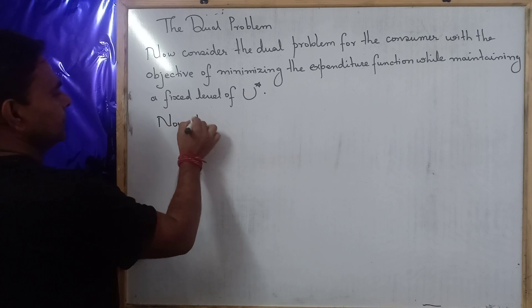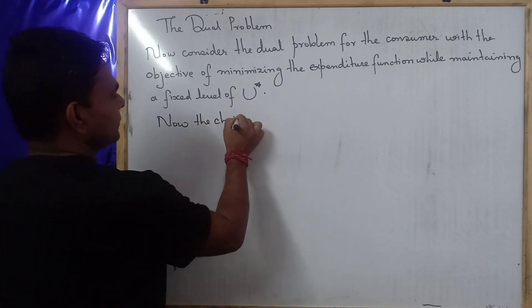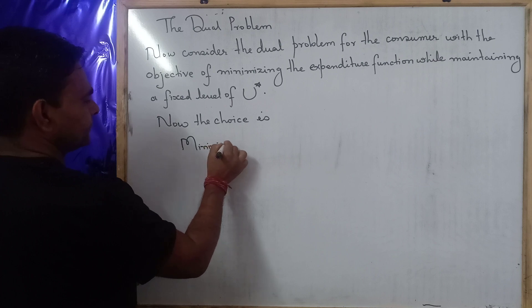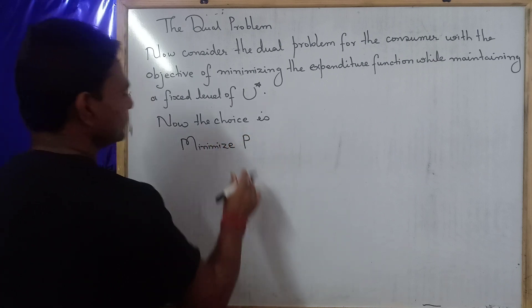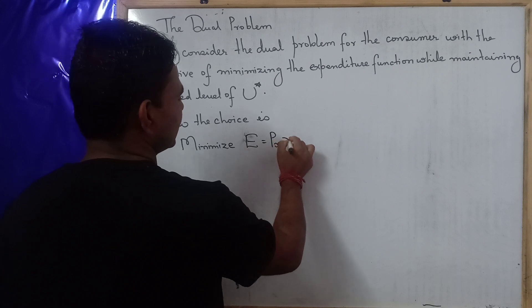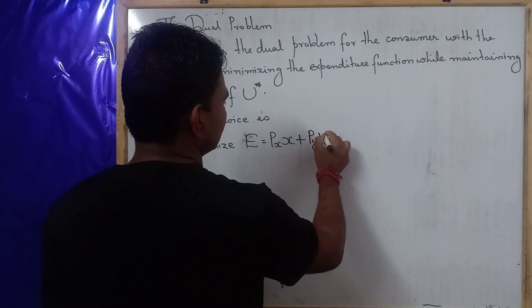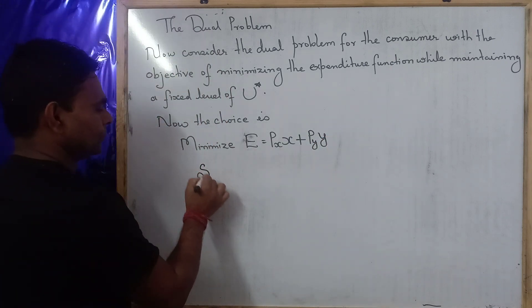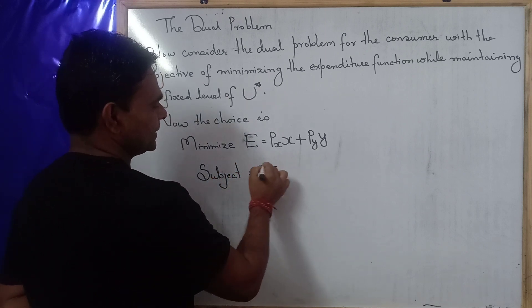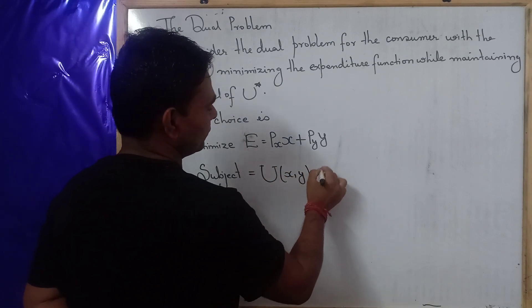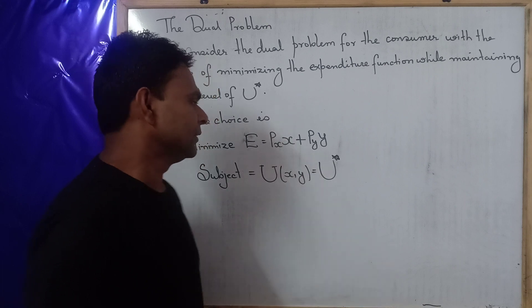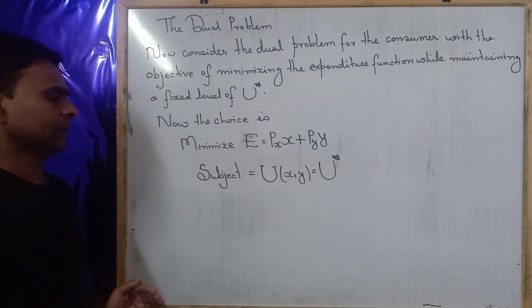The choice problem is: minimize expenditure E = Px·x + Py·y, subject to the constraint that U(x, y) equals the fixed level of utility u*. Here, u* denotes the fixed, maximum level of utility.